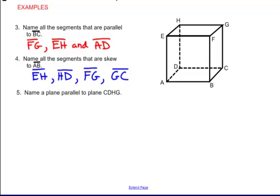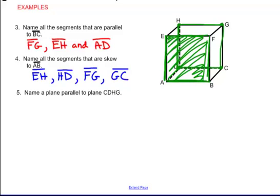Number five: name a plane parallel to plane CDHG. I find plane CDHG — it's the plane in the very back of the box. Parallel to the back plane is the front of the box. So the answer is plane ABFE, which is the front face parallel to the back. Okay folks, that's it. I hope you have a great night, and I'm excited to see what you can do in class tomorrow. Bye now.